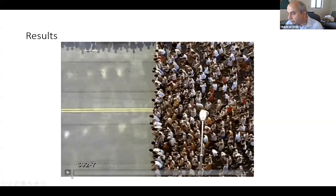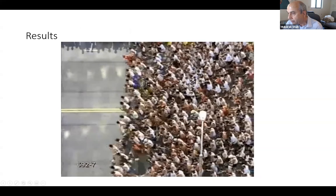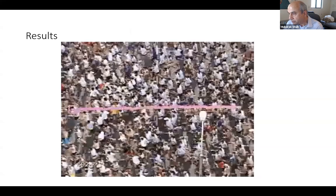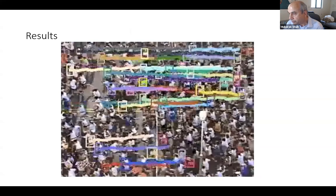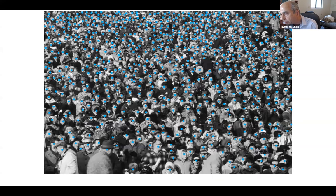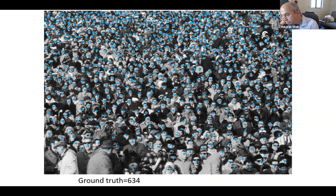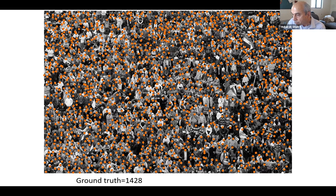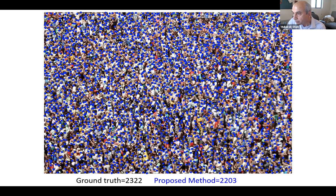We can also track each person in crowd videos. Another capability is crowd counting — how many people are in an image. We asked undergraduate students to put a dot on each person and counted 634 people. The computer estimated 640 — pretty good, since it would take a human a long time to count. Another example had 1428 ground truth and we estimated 1468 — pretty close.